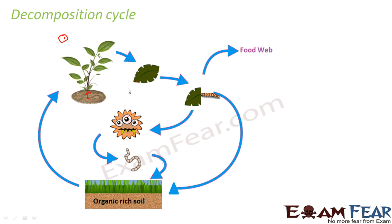When the leaves start falling to the ground — on the surface of the soil — some of these leaves might be eaten up by insects or birds, and thus they enter into the food web. So as you can see here, some of the leaves falling on the ground could be eaten by insects or other animals — that is how they enter into the food web.